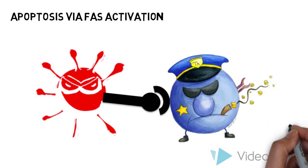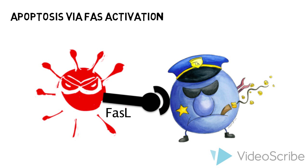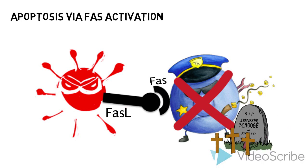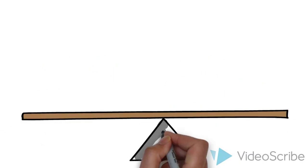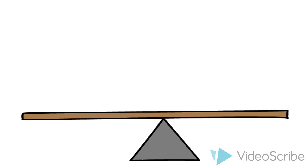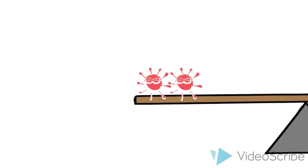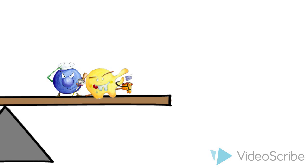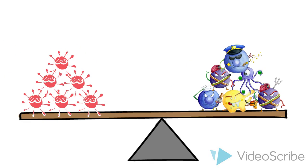Finally, CD8 T cell apoptosis via Fas activation: tumor cells express Fas ligand on the cell surface, which binds to Fas receptors on CD8 T cells, initiating apoptosis of the T cell. The importance of anti-tumor immunity is often underestimated — for every time it fails, resulting in the development of cancer, there are many more times it wins, keeping us cancer free.